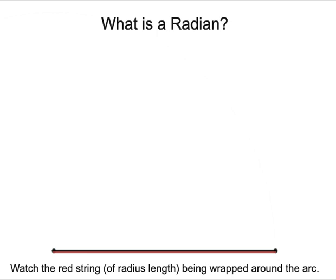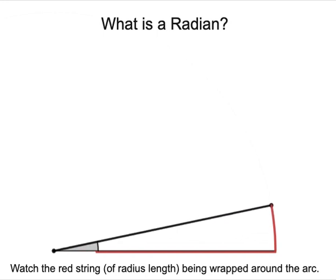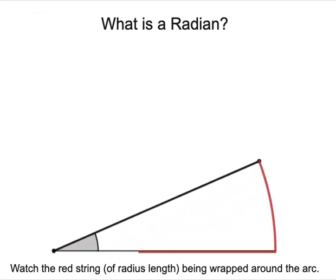Let us say we have two strings, one black and one red, of equal length. We use the black string to make a circle, and we wrap the red string around the circumference of that circle like this. You can watch the red string being wrapped around.